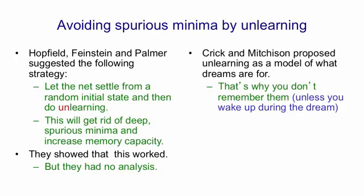Dreaming is paradoxical in that the state of your brain looks extremely like the state of your brain when you're awake, except that it's not being driven by real input — it's being driven by a relay station just after the real input called the thalamus. So the Crick and Mitchison theory at least explains functionally what the point of dreams is: it's to get rid of those spurious minima.